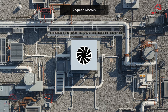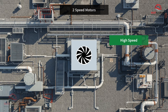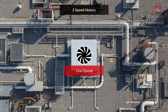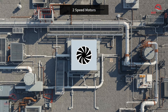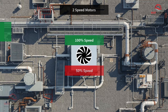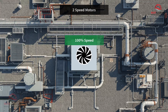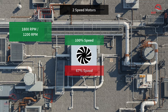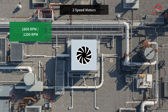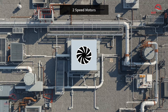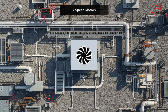Next, the two-speed motor. These motors can operate at high speed or low speed, usually by switching windings. The options are typically set up to run at 100% or 50% using 1800 and 900 RPM, or at 100% and 67% with 1800 and 1200 RPM. This provides better energy savings than pure on-off control, but you still only get two steps, so temperature control is still rough.